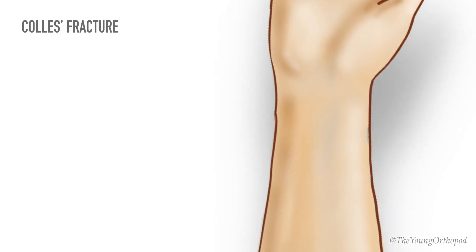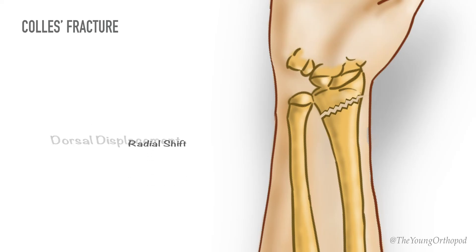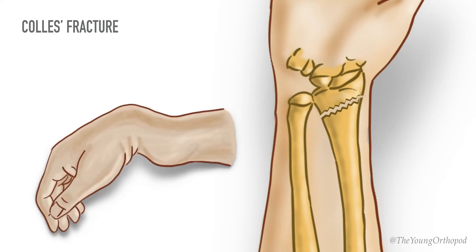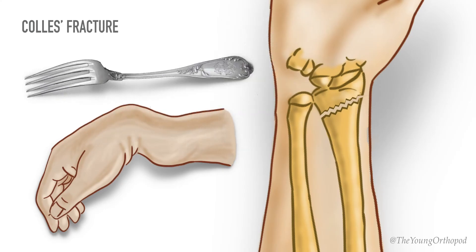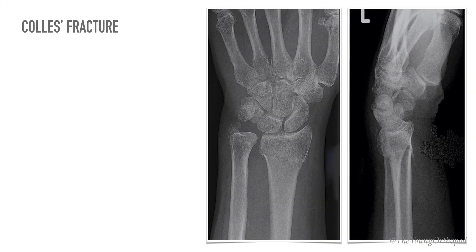Abraham Colles described a transverse fracture of the radius just proximal to the wrist joint at the corticocancellous junction, with dorsal angulation, dorsal displacement, radial shift, and radial shortening. Clinically it has been described as a dinner fork deformity. On an AP radiograph of the wrist you can appreciate the fracture line at the corticocancellous junction, and on the lateral view there is a dorsal tilt of the distal fragment.